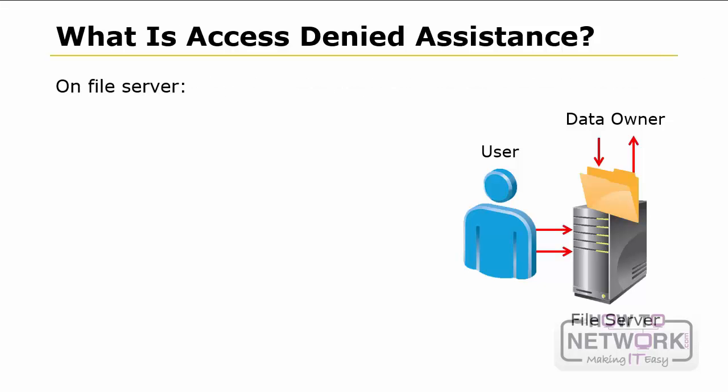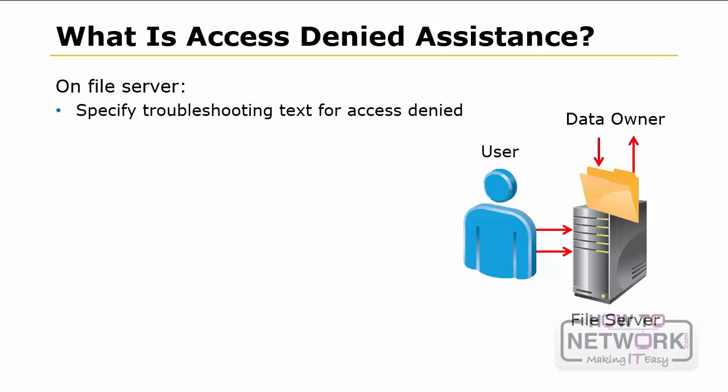One of the most common errors that users receive when they try to access a file or folder on a remote file server is an Access Denied error. Typically, this error occurs when a user tries to access a resource without having the proper permissions, or because of incorrectly configured permissions on the resource ACLs. Using DAC can create further complications if it is implemented incorrectly. For example, users who should have permission to access a resource will not be granted access if a relevant attribute value used by DAC in their account is misspelled.